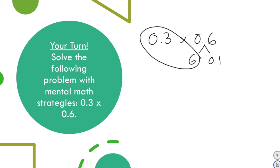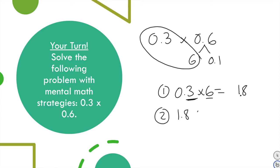Our first step: multiply 3 tenths times 6. 3 times 6 is 18, but remember this is 3 tenths, so the answer is to the tenths place — 1 and 8 tenths. The second step: multiply that times 1 tenth. The decimal moves one place to the left, giving 18 hundredths.